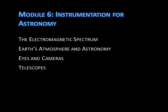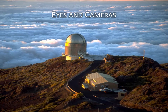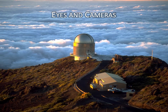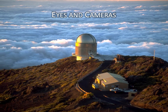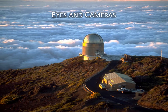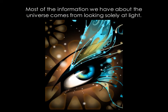In this lecture, we'll talk about the human eye and how cameras for astronomy work. Most of the information we have about the universe comes from looking solely at light. We collect this light with telescopes and record it with cameras and other instruments. Telescopes and cameras function much like the eye, so it makes sense to first talk about the principles of eyes and cameras.